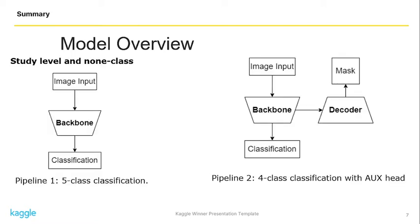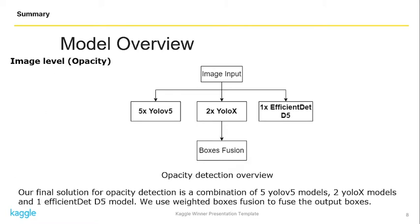This diagram shows the detail of our two pipelines for study level. For image level we use five YOLO v5 models, two YOLO X models, and one EfficientDet model. We then combine the output from the opacity detection models by weighted fusion.